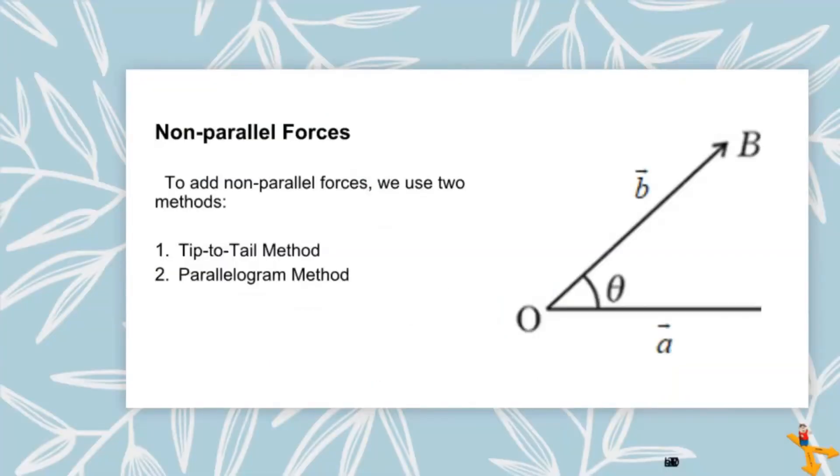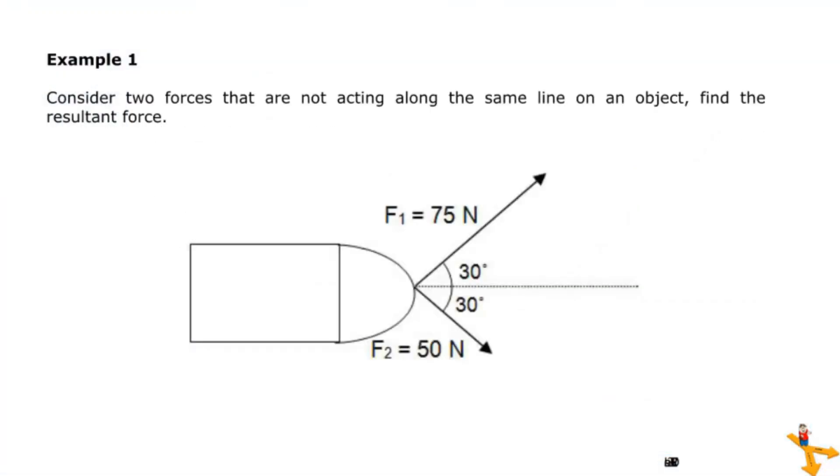Non-parallel forces. To add non-parallel forces, we use two methods: tip-to-tail method and parallelogram method. Let us answer this example while illustrating how to use the two methods. Consider two forces that are not acting along the same line on an object. Find the resultant force. F1 is 75 newtons, while F2 is 50 newtons. The angle between them is 60 degrees.